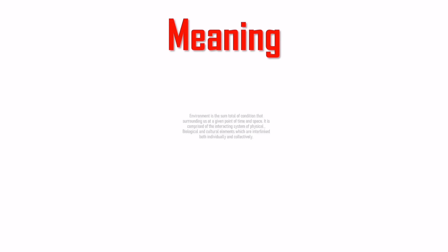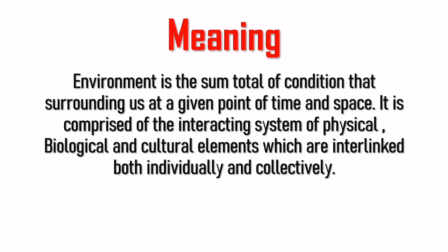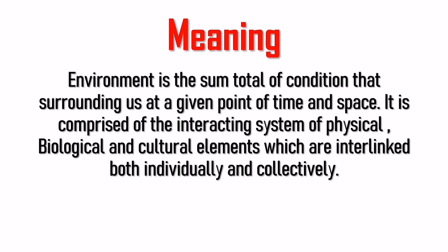Let us see what is the meaning of environment. Environment is the sum total of conditions that surrounding us at a given point of time and space. It is comprised of the interacting system of physical, biological and cultural elements which are interlinked both individually and collectively — the sum total of conditions surrounding living and non-living organisms or things.